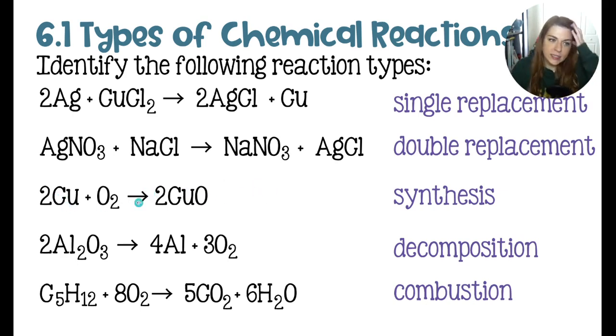Third, we have a synthesis where we have two smaller pieces coming together to make something bigger. And in this case, you have copper and oxygen making a copper 2 oxide. Important to remember that oxygen is a diatomic element.